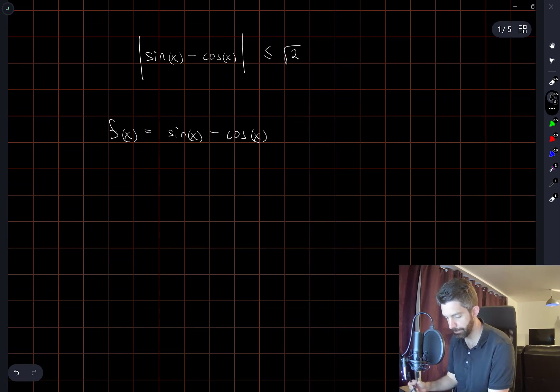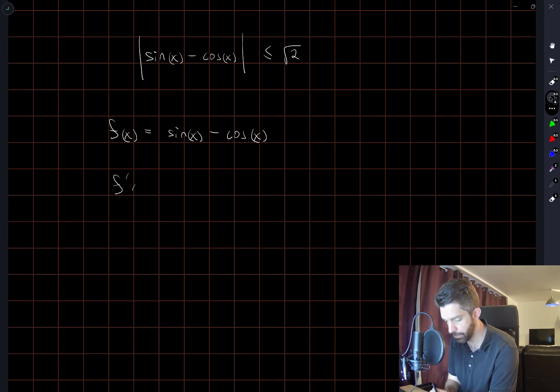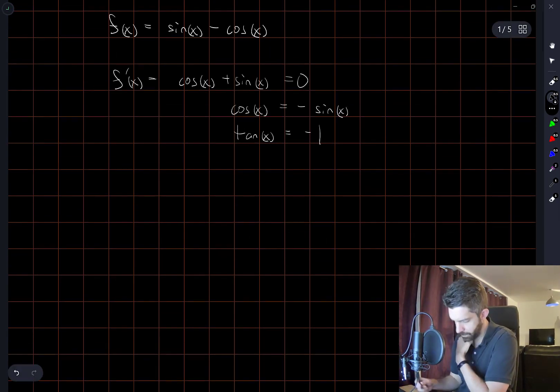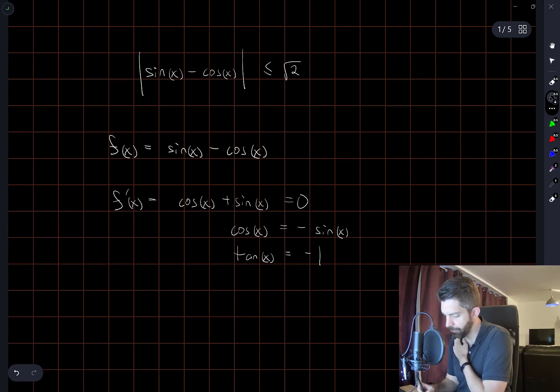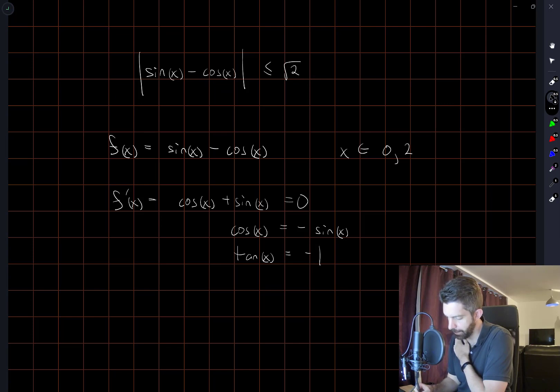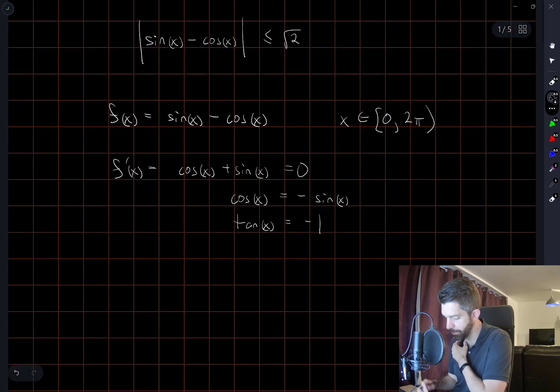Okay, so if we want to maximize this, at any maximum, we know that f prime of x has to be equal to 0. So let's compute a derivative. Now it's sufficient to only think of values between 0 and 2π, right? Because this function is just going to be periodic. It might even be sufficient to only consider values of x between 0 and π. But anyway, we'll allow x to be between 0 and 2π.